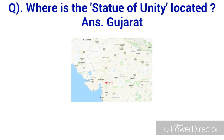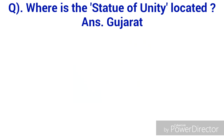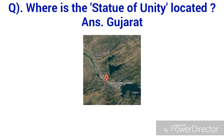The next question is: where is the Statue of Unity located? It is located on the river island of the River Narmada in Kevadia colony, near Raj Pipla in Gujarat, at a distance of 3.2 kilometers at the Sadhu Bet. It is also 100 kilometers southeast of the city of Vadodara.